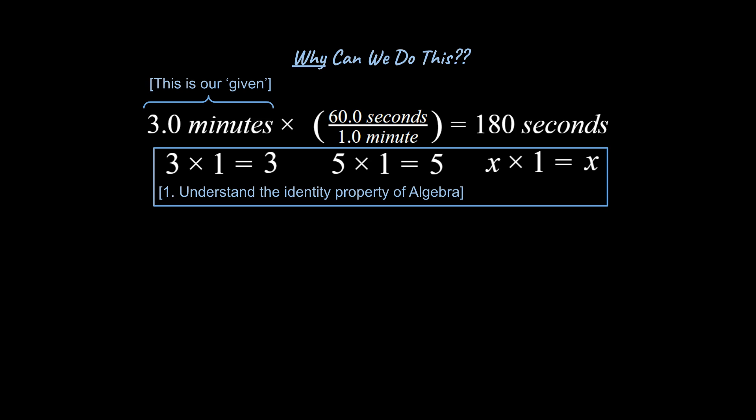That's all we're doing is we're taking our given and multiplying it by a fraction that's equivalent to one. So let me prove to you that that fraction is equivalent to one. So I want to start with this equivalency right here. So 60 seconds is equal to one minute. You know this already.